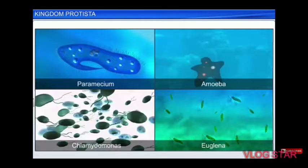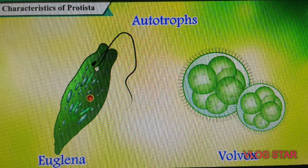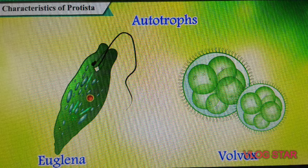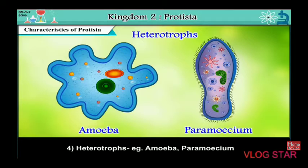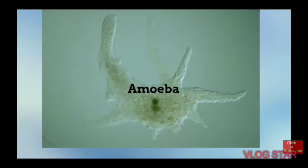Third, some Protists are autotrophs, meaning they can prepare their own food. For example, Euglena and Volvox contain chloroplasts, so they can prepare their own food. While others are heterotrophs, meaning they depend on others for food. For example, Amoeba and Paramecium.